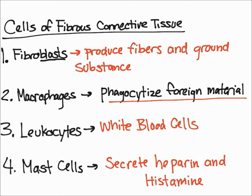The fourth type of cell are mast cells. These cells are found along the side of blood vessels. They secrete heparin and histamine. Heparin is an important anticoagulant, which means it helps reduce the ability of blood to clot.